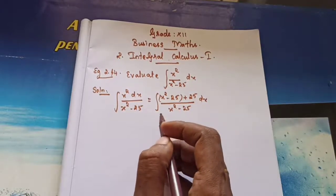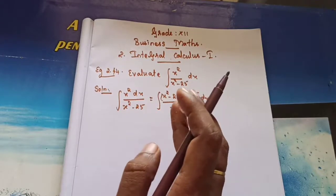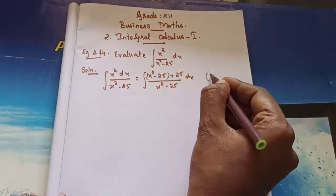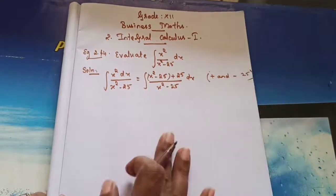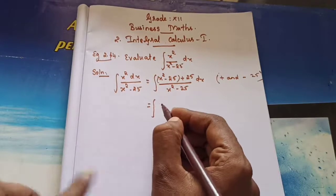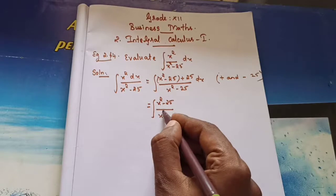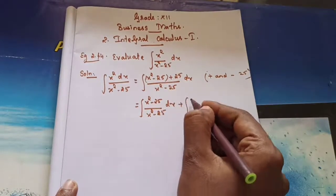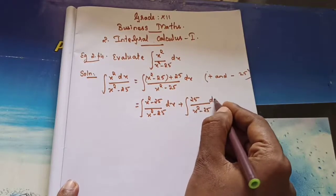What I did here — I added and subtracted 25 in the numerator. So now we are going to split this into two integrals: integral of (x² minus 25)/(x² minus 25) dx plus integral of 25/(x² minus 25) dx.